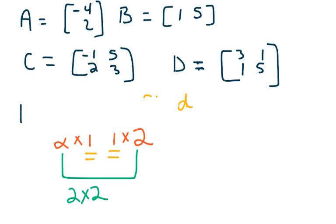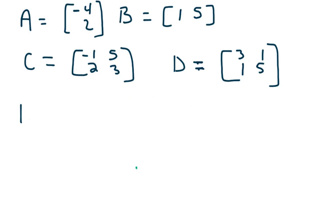Let's try another one. Let's do B times A. I just did the inverse of it. So we have B, which is a one by two, and A, which is a two by one.